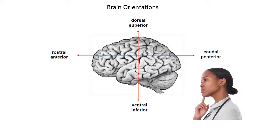On the second axis, you can call it the top-to-bottom axis, also called the dorsal and ventral axis, or the superior and inferior axis of the brain. Parts of the brain towards the top can be called the dorsal or superior areas, and parts towards the bottom side can be called the ventral or inferior areas.